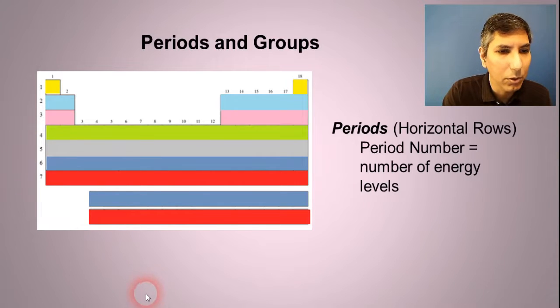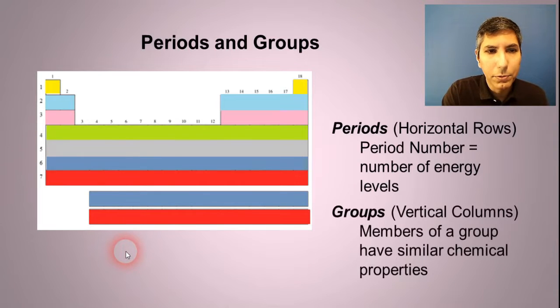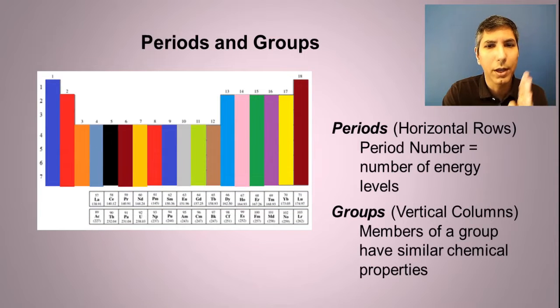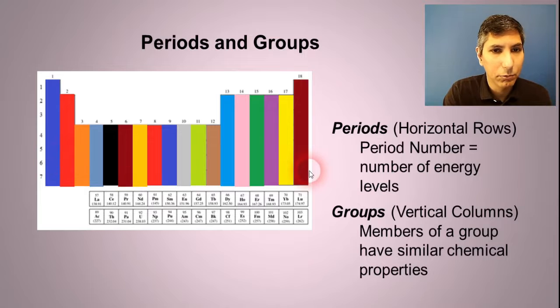Now the groups, these are the vertical columns that are going up and down. The way I have it drawn here, about basically 18 groups, and members of a group have similar chemical properties. Sometimes the groups are called families just for that reason.